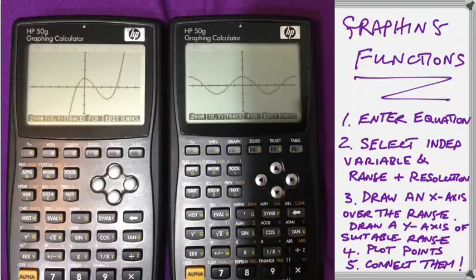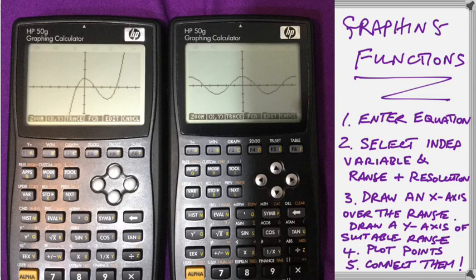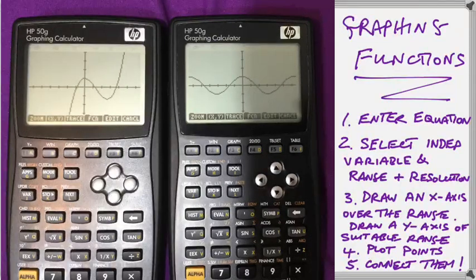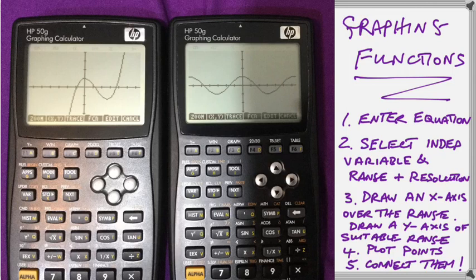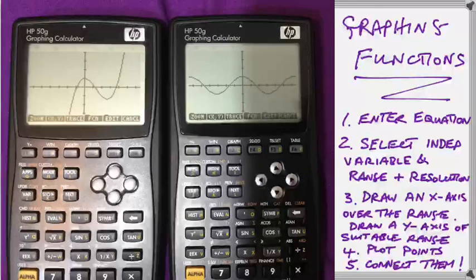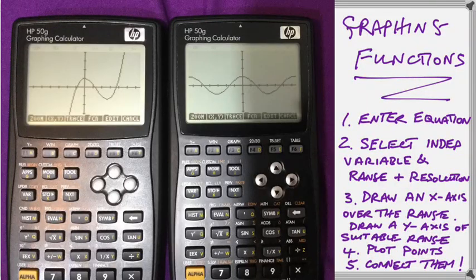Then we need to draw some axes. We need to draw axes that will be able to support the range of the independent variable and the calculated value of the function for those values. After we've done that, we can plot the points on the graph, and then finally we can connect them all up in a nice smooth line. You see that procedure done there nicely for you on our two HP50G calculators.